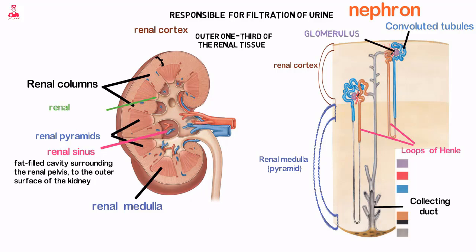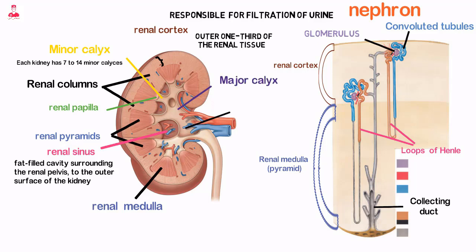Arising from the renal papilla are the cup-shaped minor calyces. Each kidney has 7 to 14 minor calyces that merge into 2 or 3 major calyces. The major calyces join to form the renal pelvis, which is the largest dilated portion of the collecting system, and is continuous with the ureters.